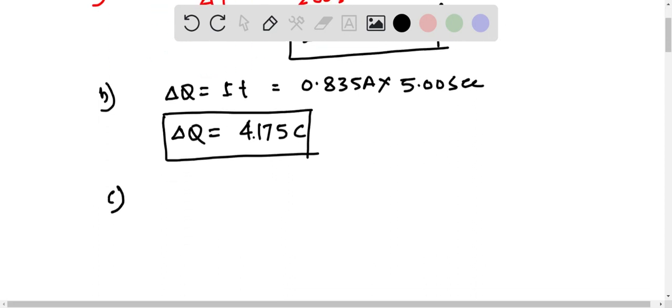Now part c: the number of electrons equals the total amount of charge flown over the elementary charge on the electron, that is 4.175 coulombs over 1.6 times 10 to the minus 19 coulombs per electron, or the number of electrons flown equals